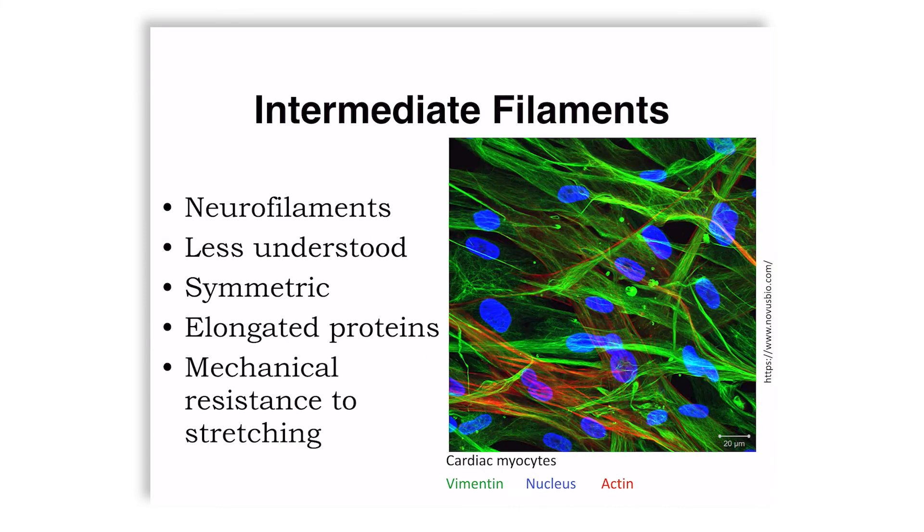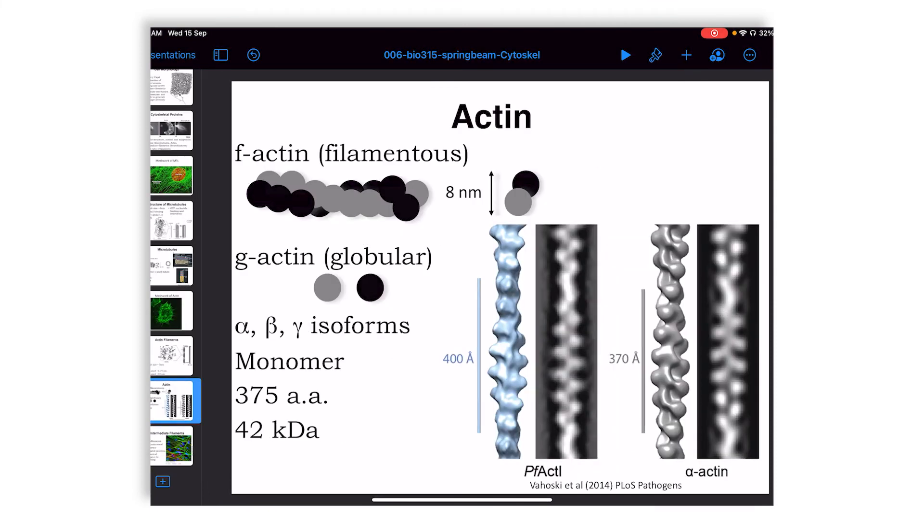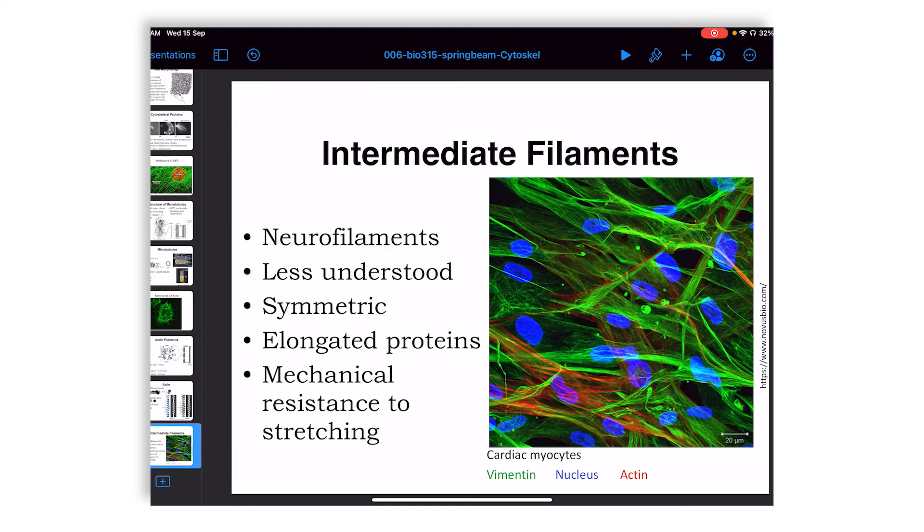Coming to the so-called third system, which is intermediate filaments, intermediate filaments are less understood. They also form more symmetric structures, that is to say not like plus and minus structures. I may have missed that, but the barbed ends of actin are like the plus ends of microtubules and pointed ends are like the minus ends of microtubules.